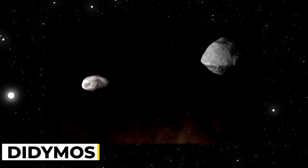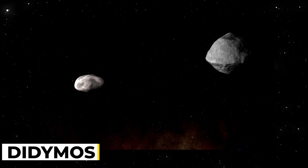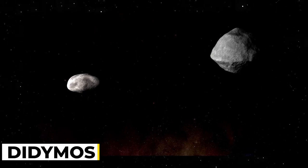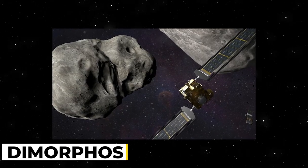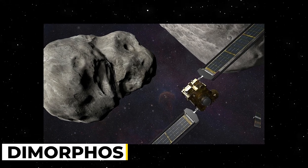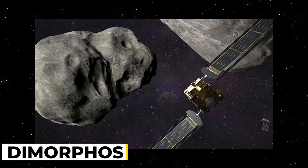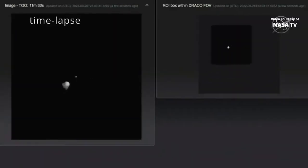Didymos, which in Greek means twin, is the name of the binary asteroid system that DART was designed to track. The system consists of the moon Dimorphos, which is 525 feet in diameter, and the near-Earth asteroid Didymos, which is about 0.48 miles across.